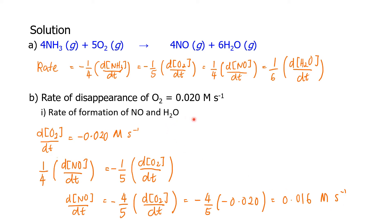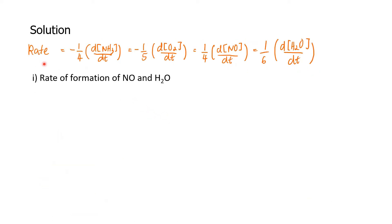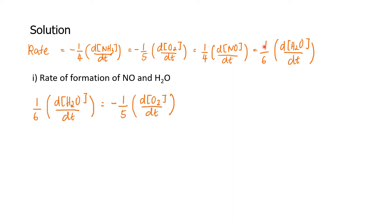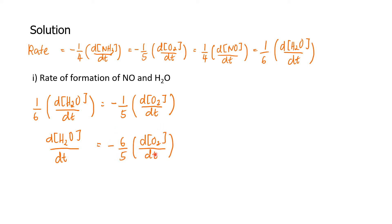Using the same technique to find the rate of formation of H₂O, we take the H₂O and O₂ terms from the differential rate equation and rearrange to get: rate of formation of H₂O = −6/5 × dO₂/dt. Substituting dO₂/dt = −0.020 gives the rate of formation of H₂O = −6/5 × (−0.020) = 0.024 molar per second.